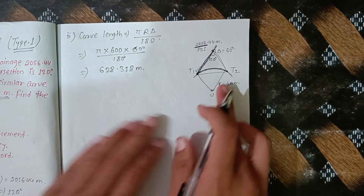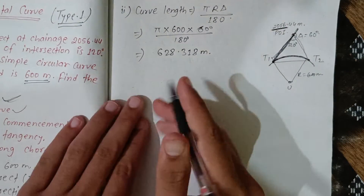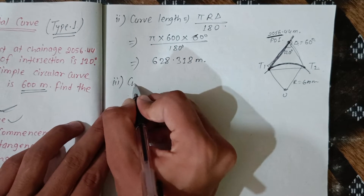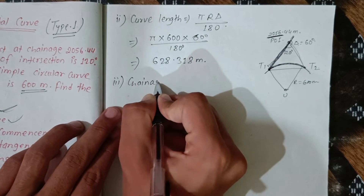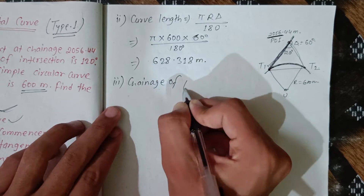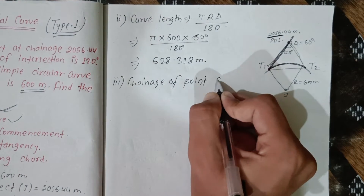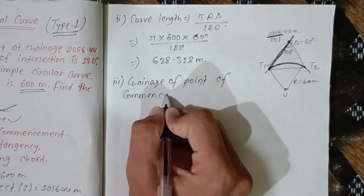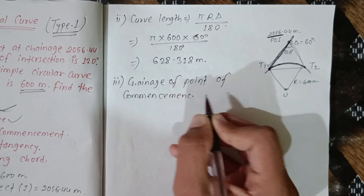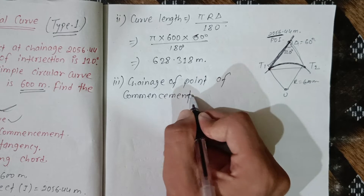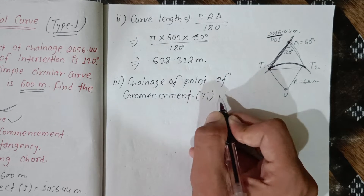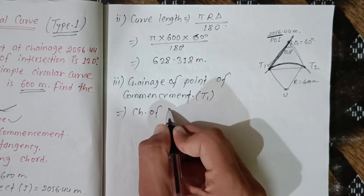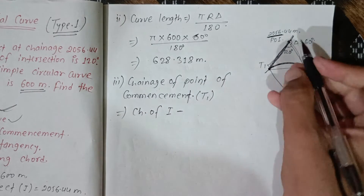The third item is the chainage of the point of commencement T1. The formula uses the chainage of the intersection point I, minus the tangent length T1.